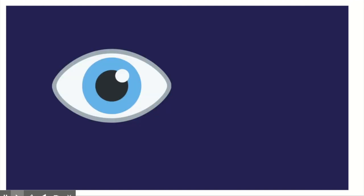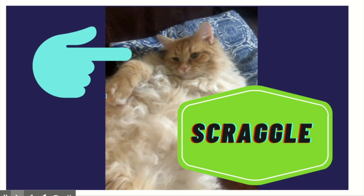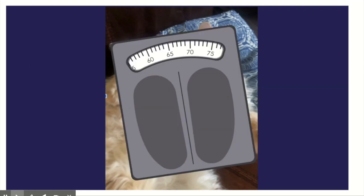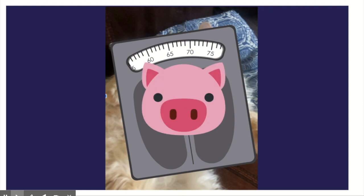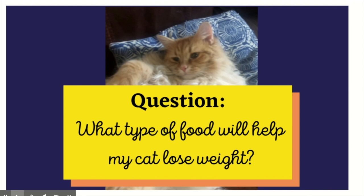What does this look like in real life? I'm going to give you an example using my lab partner, Scraggle — my cat. He's about five years old and has a bad hair day every day, which is how he got his name. You might also notice he has a little bit of a weight problem. That is an observation we've just made — he's a little chunky. That might lead us to ask a question: what type of food would help my cat lose weight? We're jumping right into the scientific method.